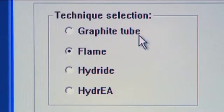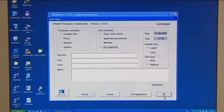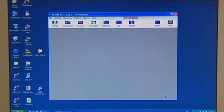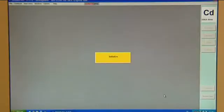Changing over between the flame technique and the graphite furnace technique involves only a mouse click. All instrument settings are software controlled. Due to the mature design, there is no need for any expensive adjustments.